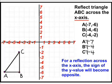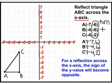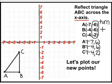So let's just rewrite all the x values exactly the same: negative 7, negative 4, and negative 4. Now let's take all of the y values. Because each of the y values were negative, simply turn them positive. So instead of negative 6, negative 6, and negative 2, we now have 6, 6, and 2. Now we have the location of the three new points when reflecting our original triangle across the x-axis.